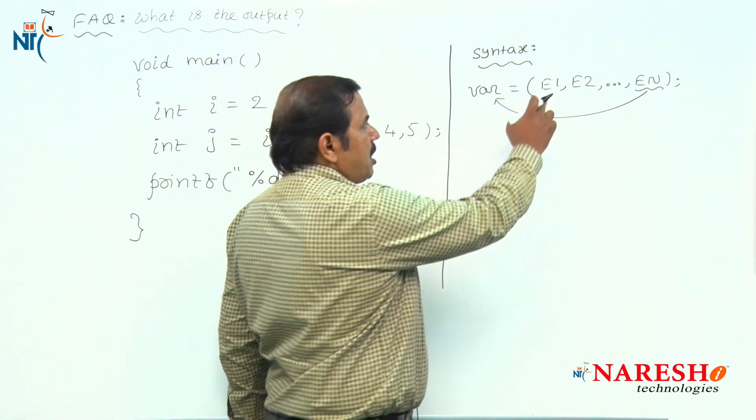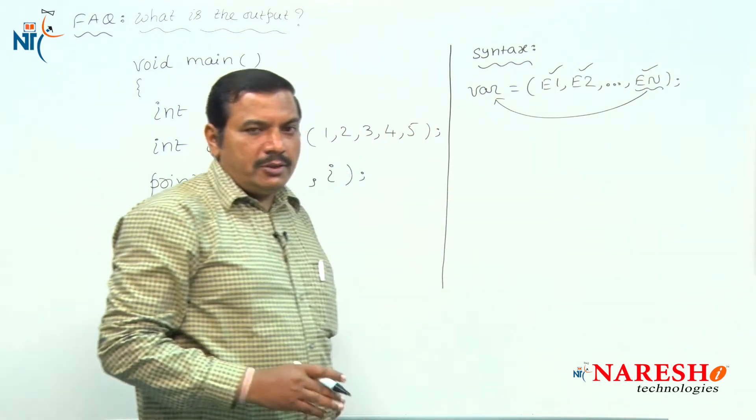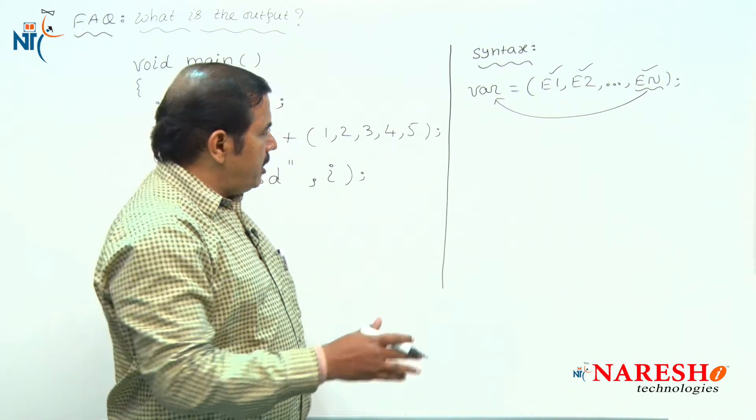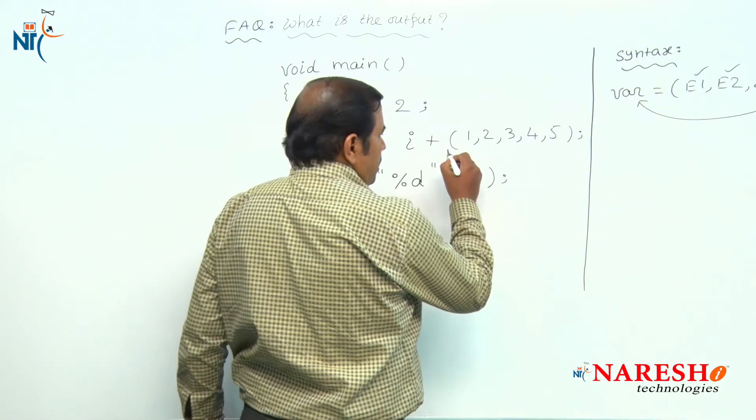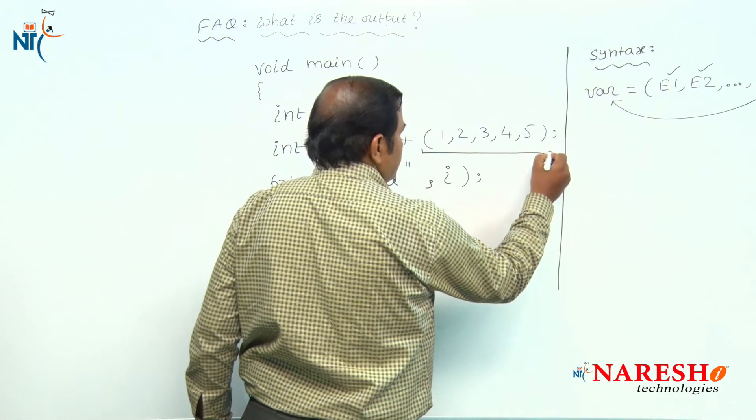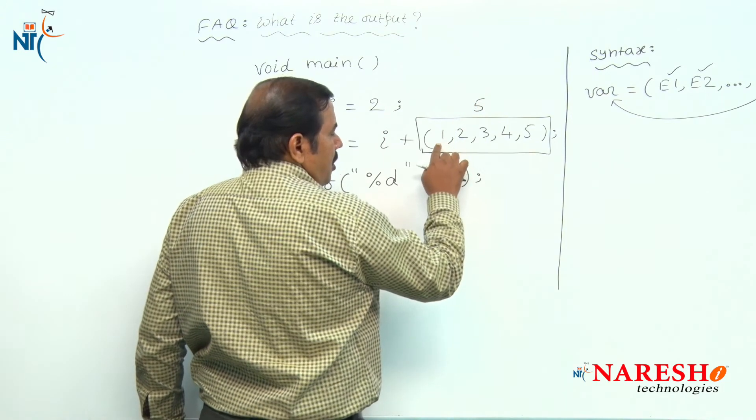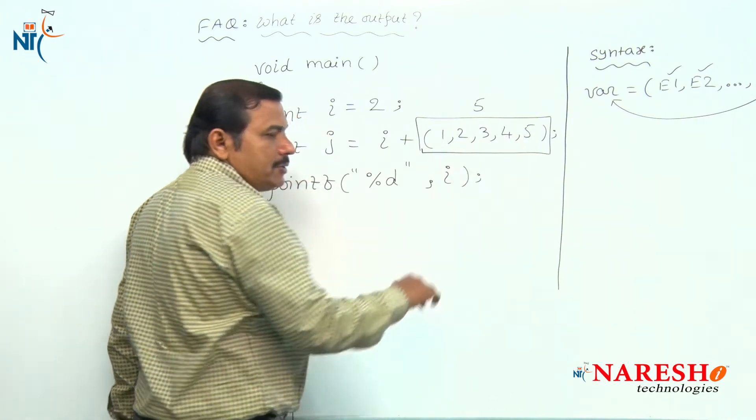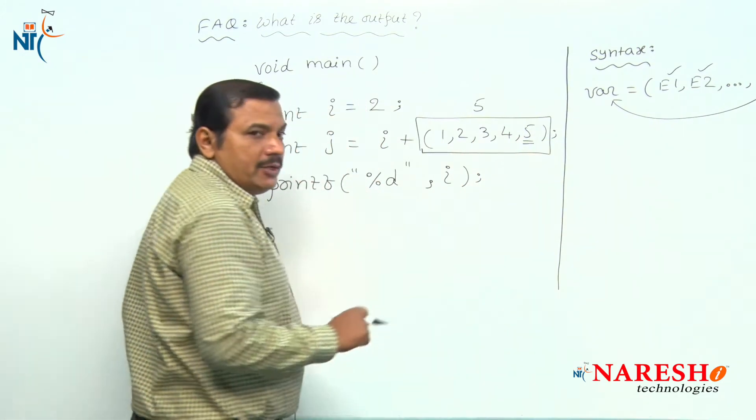For this comma operator, the operands may be expressions, variables, or constants. Now, coming to this question, the result of this part is 5 because all the expressions separated with comma are evaluated left to right. The rightmost expression value is the final result.